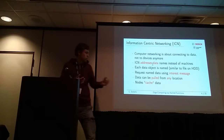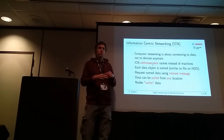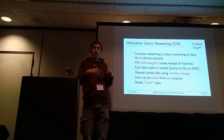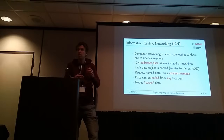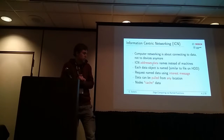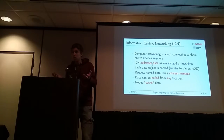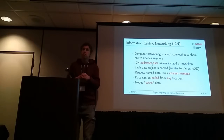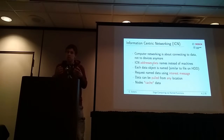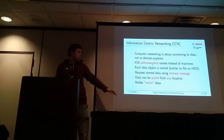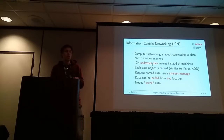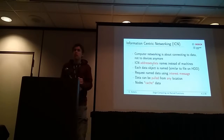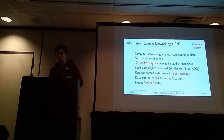If you want to request one data object, you send a kind of interest message saying you want to get this YouTube video, and the network will deliver it from any possible location. By having these location-independent nodes, the router could also cache data that are often requested in a special region. That's kind of content delivery networking inside the network.